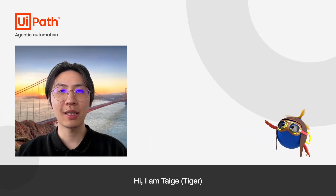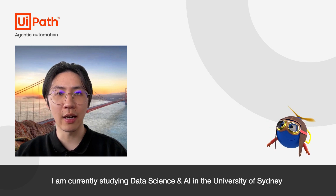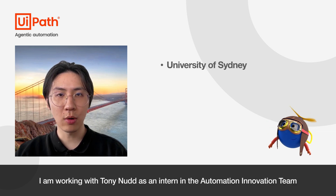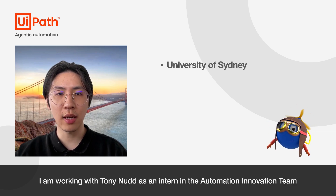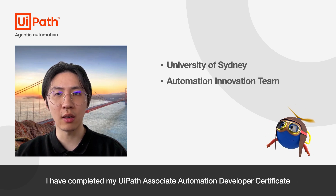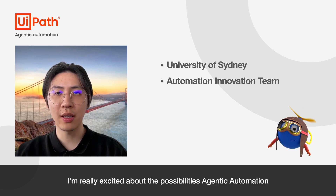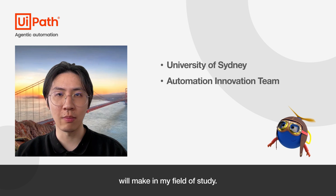Hi, I'm Tiger. I'm currently studying data science and AI at University of Sydney. I'm working with Tony Nudd as an intern in the automation innovation team. I have completed my UiPath Associate Automation Developer Certificate and also Agent Builder training.